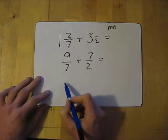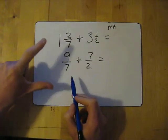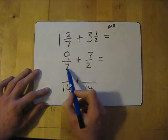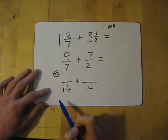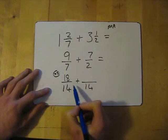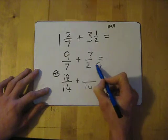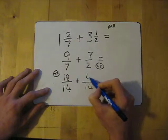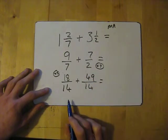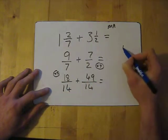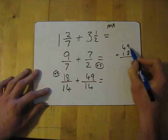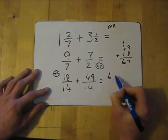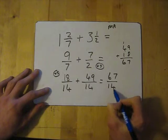The common multiple for 7 and 2: 7 doesn't work, 14 works for both. So we're going to change them both into 14ths. What have we done to 7 to get 14? Times by 2, so we times the top by 2 as well, giving 18. What have we done to 2 to get 14? Times by 7, so we times the top by 7: 7 times 7 gives 49. Then 49 add 18 — doing quick column addition — gives 67. So I've got 67 over 14.